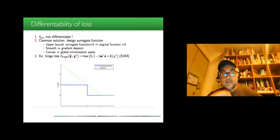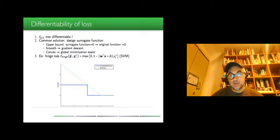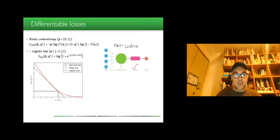Instead of this, a common solution is to design a surrogate function that would be an upper bound of this blue line. This upper bound should be something which is smooth, so that we can do gradient descent, so that we can have a global minimization which can be done easier. There are variants such as the hinge loss corresponding to this expression, or even the binary cross-entropy or the logistic loss which are plotted here on the green and red line.